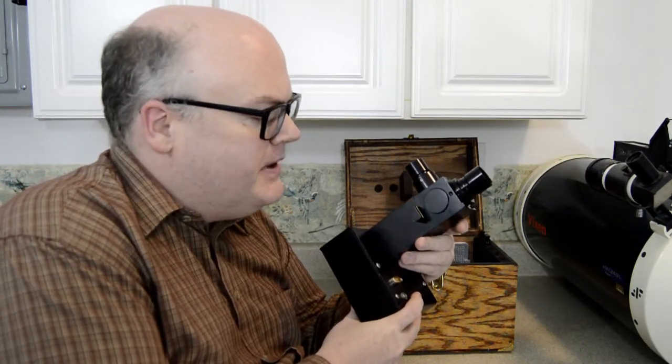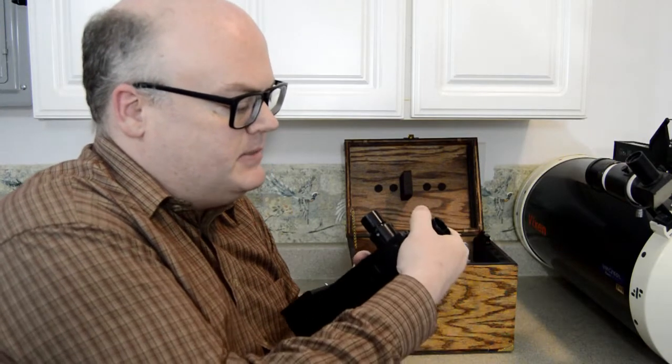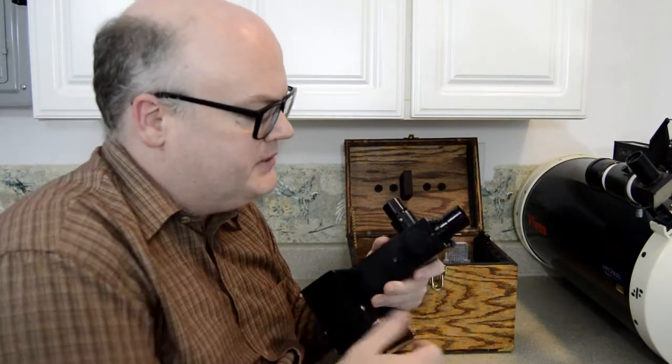Now this is the OPTEC SSP-3 photometer. It's made by OPTEC, a company located near Detroit in Michigan. And as you can see it has a standard one and a quarter inch mount here to go in the focuser of the telescope.